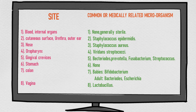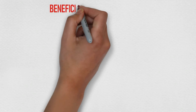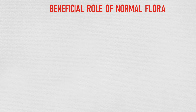In the gingival area, anaerobes such as Bacteroides, Prevotella, Streptococcus, and Actinomyces are found. In the stomach, there is no normal flora. In the colon, in breastfeeding babies we can find Bifidobacterium, whereas in adults we find Bacteroides or Escherichia. In the vagina, Lactobacillus is found.